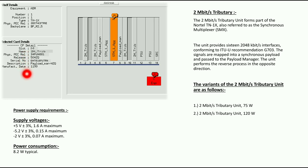Right now we are selecting the 2M card in slot 20. These are the basic features of the 2 Mbit/s tributary card. This unit provides sixteen 2048 kbit/s interfaces. The signals are mapped into the synchronous payload and passed to the payload manager. There are two variants available.